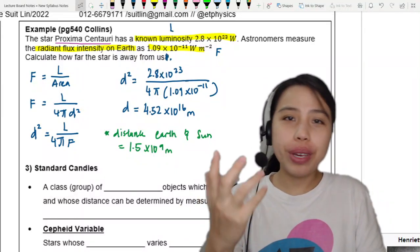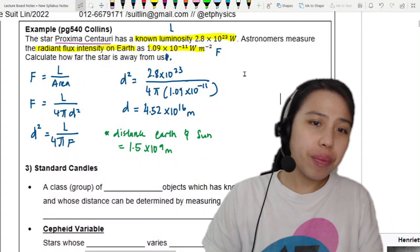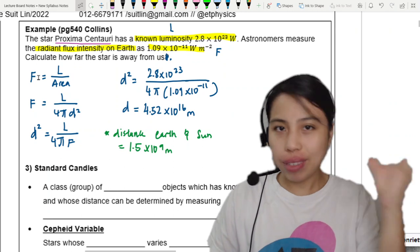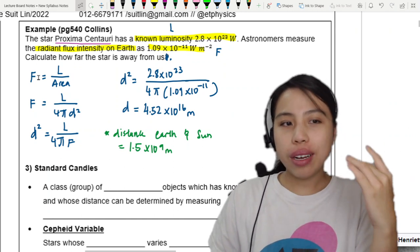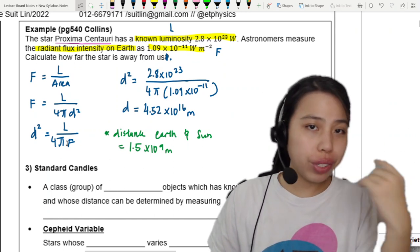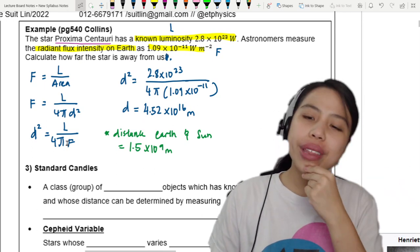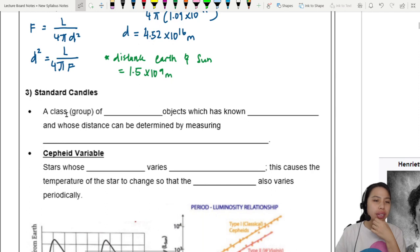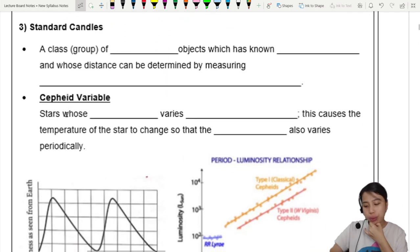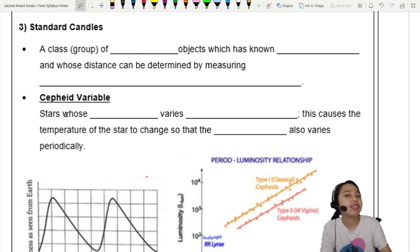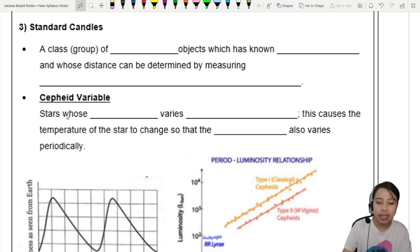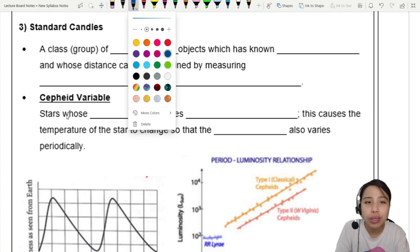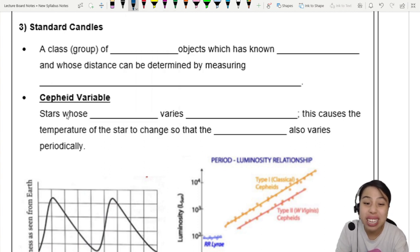Previously we looked at how you can use radiant flux intensity, which is the light coming to you at Earth, to find the distance to a certain star. When we think about distance, it's a bit hard because if you look at the sky there's many different brightness of stars. So people came up with this idea of a standard candle, something with a standard brightness.